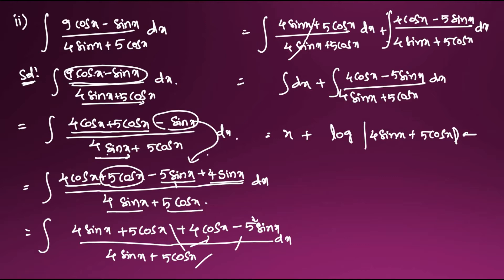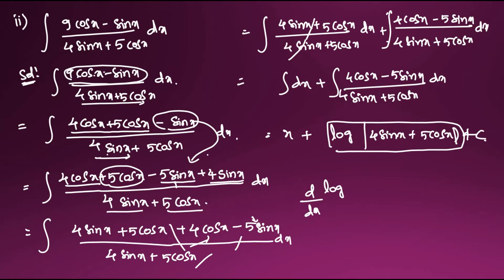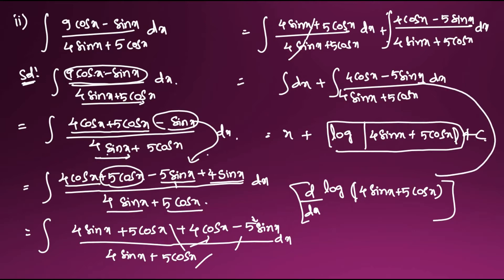So the total answer is x + log|4sinx + 5cosx| + C. To understand why: d/dx of log(4sinx + 5cosx) = (4cosx - 5sinx)/(4sinx + 5cosx), which matches the numerator. I'm explaining every step slowly. Now moving to the next question.